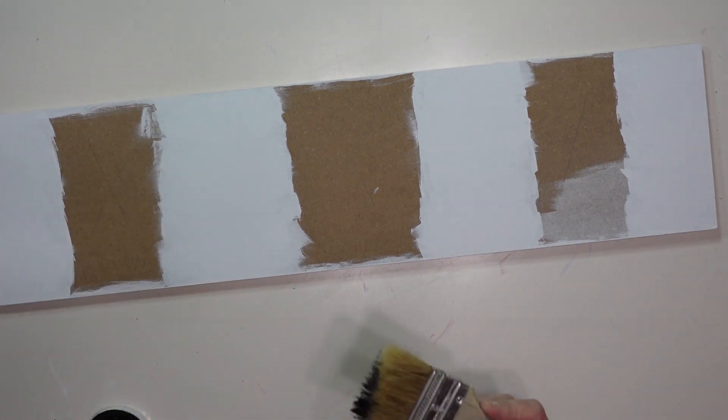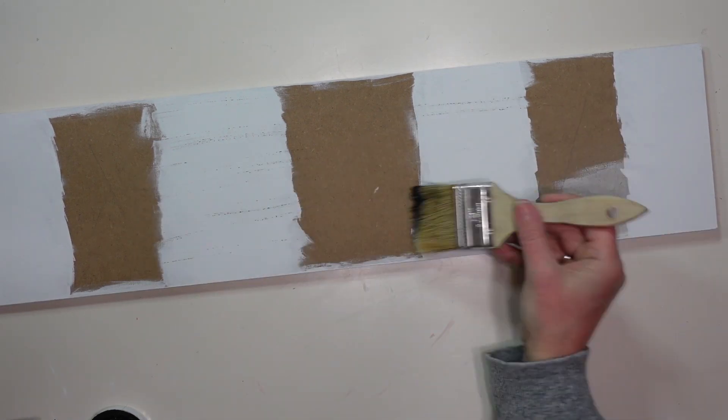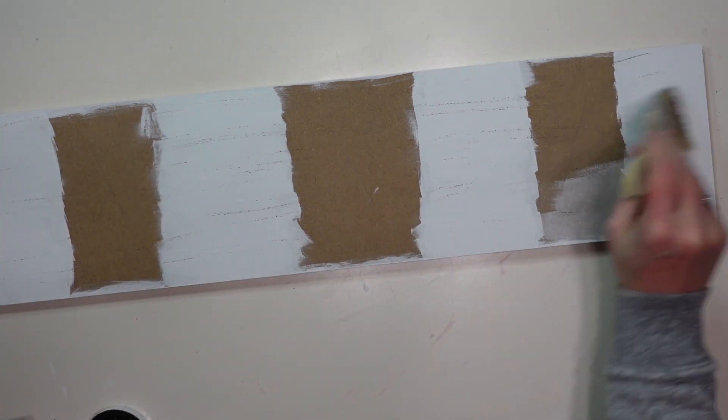And then I'm going to take a little bit of black chalk paint and a dry brush and I'm just going to lightly dry brush over the tops of my white paint just to give this a little bit of a worn aged look.